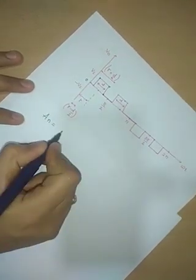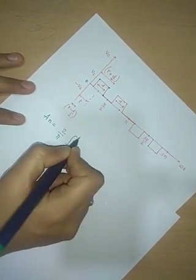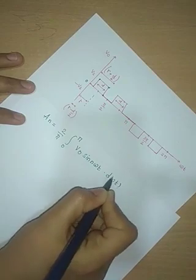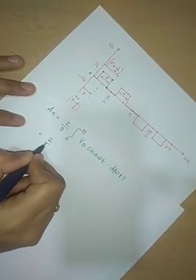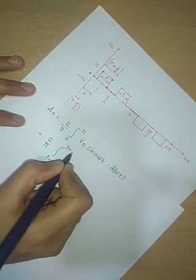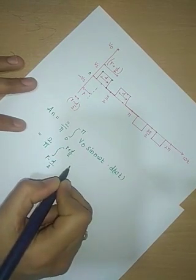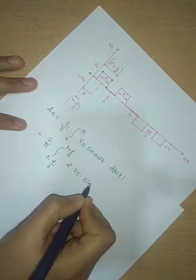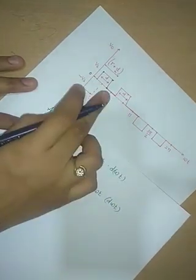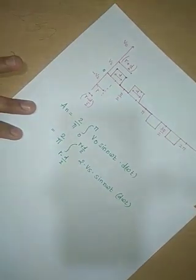We will see the Fourier series analysis of pulse width multiple pulse modulation. The Fourier series constants are given as: an = (2/π) × integral from 0 to π of Vout × sin(nωt) × d(ωt). This equals (2/π) × integral from γ − d/2 to γ + d/2 of 2Vs × sin(nωt) × d(ωt). The factor of 2 is included because within a half cycle, 2 pulses get generated.